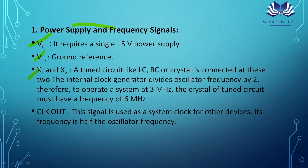X1 and X2 are the oscillator pins used to generate the clock frequency. A tuned LC or RC crystal oscillator circuit is connected to X1 and X2. The internal clock generator divides the input frequency by 2. So if the crystal circuit is 6 MHz, the processor's operational frequency will be 3 MHz. If it is 5 MHz input, the processor runs at 2.5 MHz.